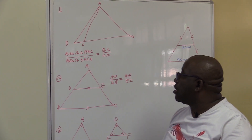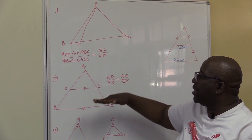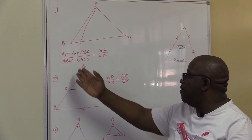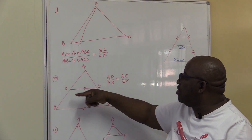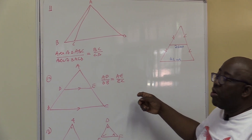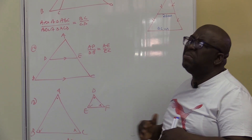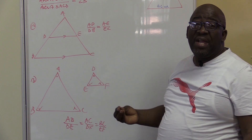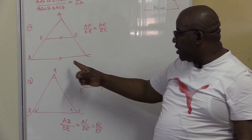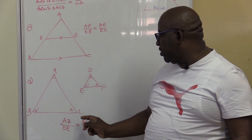The second Grade 12 theorem is the proportionality theorem: a line drawn parallel to one side of a triangle divides the other two sides proportionally, so AD over DB equals AE over AC. The proof of this theorem is also required in the exam. The third theorem is the similarity theorem: if two triangles are similar, then the ratios of their corresponding sides are equal — AB over DE equals AC over DF equals BC over EF.